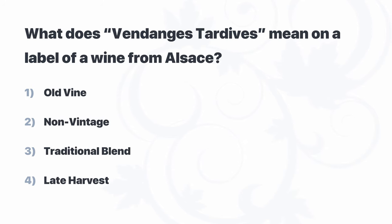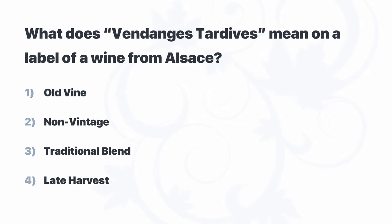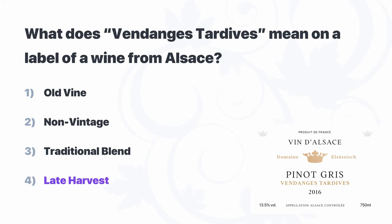What does Vendange Tardive mean on a label of wine from Alsace? Old vine, non-vintage, traditional blend, or late harvest? Alsace is absolutely influenced by Germany, and its approach to wine demonstrates that, specifically in its focus on ripeness levels as we climb the ladder from the regional Alsace AOP to the Alsace Grand Cru level. We might remember the sweet wines made with extra ripe grapes labeled Vendange Tardive — and these wines are made with late harvest fruit.